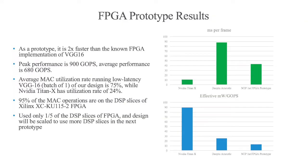We implemented our design in an FPGA. We can achieve peak performance of 900 gigaops. When running VGG16, we can achieve 45 milliseconds per frame, which means our average performance is 680 gigaops, with an average hardware utilization rate of 75%.